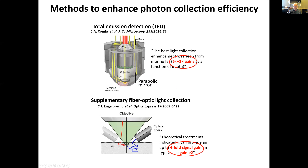A few methods have been proposed to enhance imaging depth by collecting those extra photons that would otherwise miss the objective. One method, called total emission detection, proposes using a parabolic mirror around the objective to reflect otherwise-missing photons back to the detector — this was shown to give a signal gain of about a few times depending on imaging depth. Another proposed method uses a ring of optical fibers around the objective — the same idea of picking up photons that would otherwise miss the objective — also increasing the collected signal a few times.